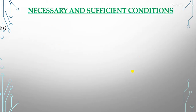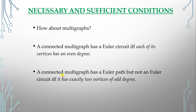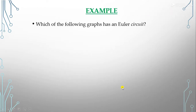Now, the necessary and sufficient conditions for Euler circuits in multigraphs: a connected multigraph has an Euler circuit if each of its vertices has even degree, and it has an Euler path but not an Euler circuit if and only if it has exactly two vertices of odd degree. Now let us check which of the following graphs form an Euler circuit.